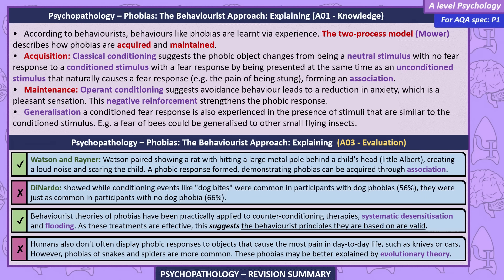Evaluations. Watson and Rayner paired showing a rat with hitting a large metal pole behind a child's head — Little Albert — creating a loud noise and scaring the child. A phobic response formed, demonstrating phobias can be acquired through association. However, Di Nardo showed that while conditioning events like dog bites were common in participants with dog phobias at 56%, they were just as common in participants with no dog phobia at 66%. Behaviorist theories of phobias have been practically applied to counter-conditioning therapies. Also, humans don't often display phobic responses to objects that cause the most pain in daily life, such as knives or cars, whereas phobias of snakes and spiders are more common — these may be better explained by evolutionary theory.